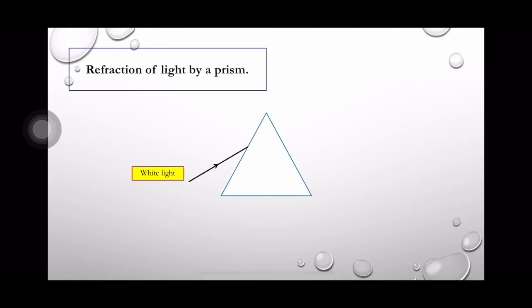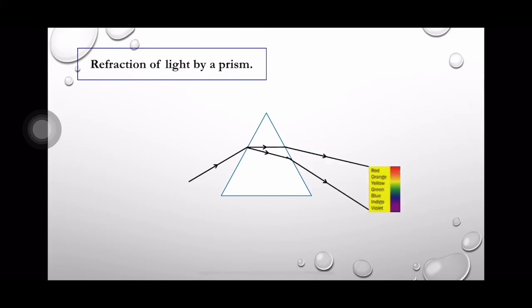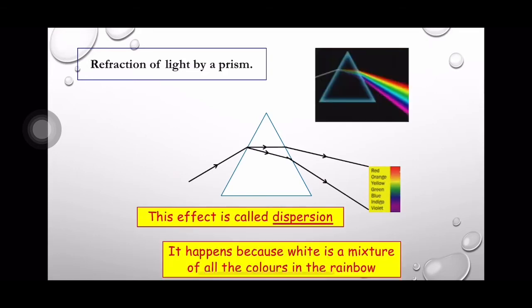When white light is incident at an angle from one side of a prism, it will be refracted inside the prism. But as it emerges from the prism, it forms the spectrum. This phenomenon is called dispersion. This happens because white light is a mixture of all the colours in the rainbow.